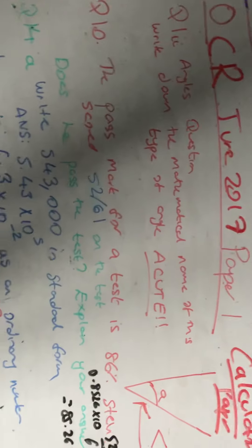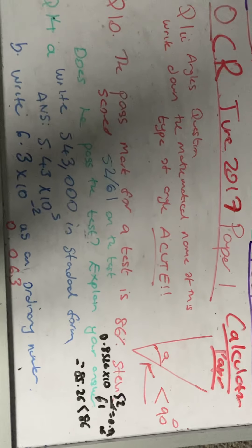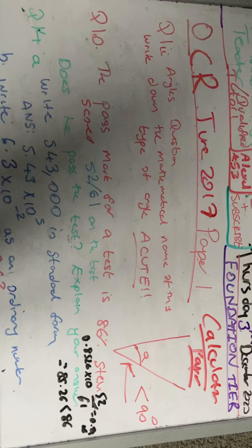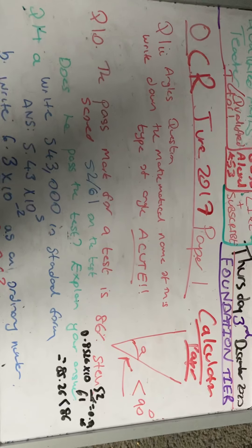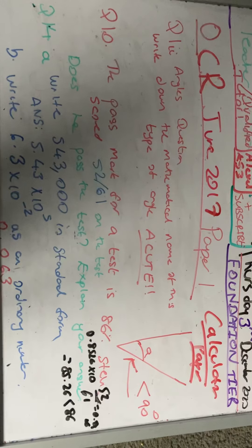Question number 14. It says write 543,000 in standard form. Standard form is a number between 1 and 10, times 10 to the power of a number.